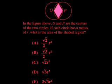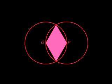In the figure above, O and P are the centers of the two circles. If each circle has a radius of R, what is the area of the shaded region? The area of the shaded region? Do you know the formula for the area of a diamond? Let's look at that shaded region a lot closer.